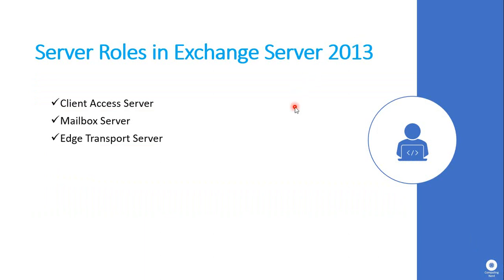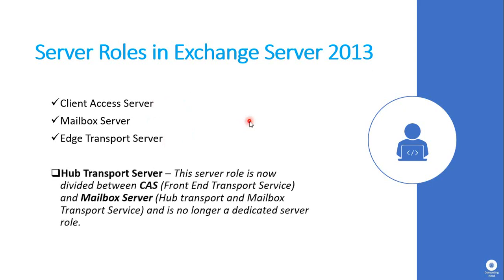Exchange Server 2013 has three server roles that can be installed: the Client Access Server role, the Mailbox Server role, and the Edge Transport Server role. The Hub Transport Server role from previous versions of Exchange Server is now divided between the Client Access Server role and the Mailbox Server role, so its functions are now performed by those two roles.